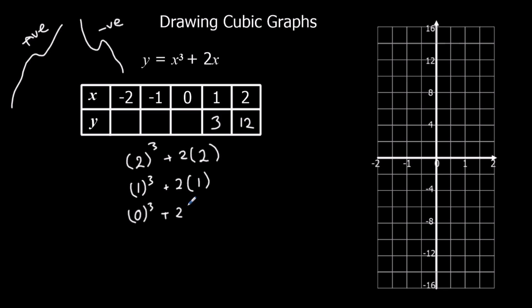0 cubed plus 2 zeros. Well 0 cubed is 0, 2 zeros are 0, so this is 0. So minus 1 cubed plus 2 minus 1. Minus 1 cubed is minus 1, because minus 1 times minus 1 makes plus 1, and then times minus 1 again makes minus 1. Plus 2 minus 1's, which is minus 2. So minus 1, minus 2, minus 3. Minus 2 cubed plus 2 minus 2's. Minus 2 cubed is minus 8. Minus 2 minus 2's, which is minus 4. Minus 8 minus 4 is minus 12.